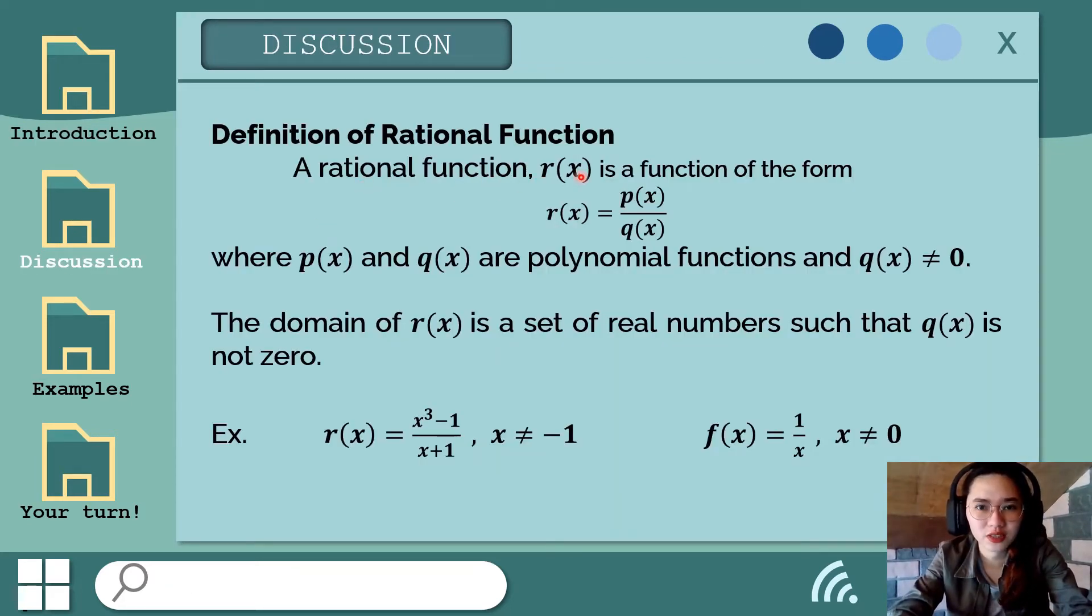let's define what a rational function is. So a rational function r of x is a function of the form p of x over q of x where yung p of x and q of x natin are polynomial functions and the q of x must not equal to zero. O hindi po siya zero function. And the domain of r of x will be the set of real numbers such that q of x is not zero.